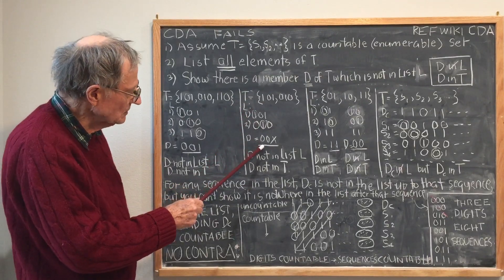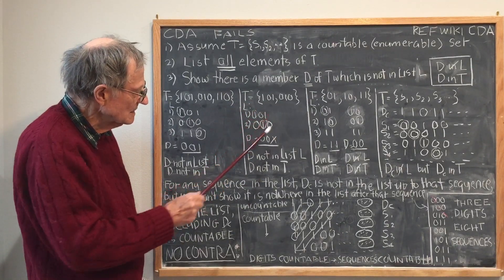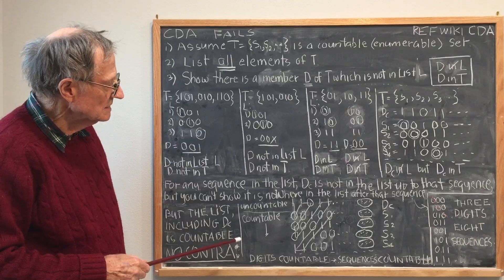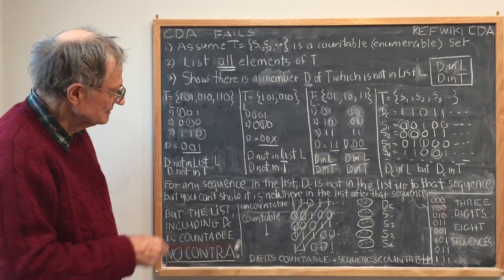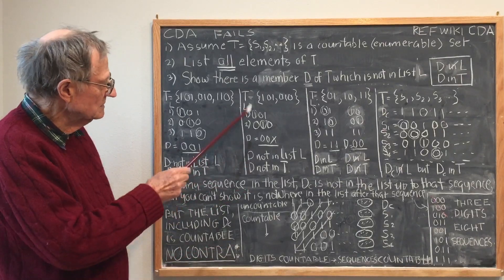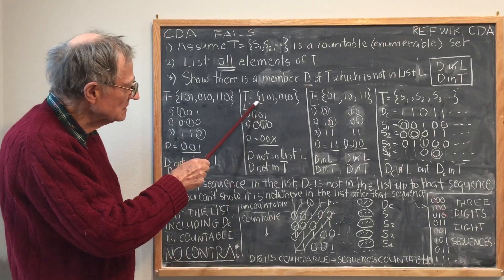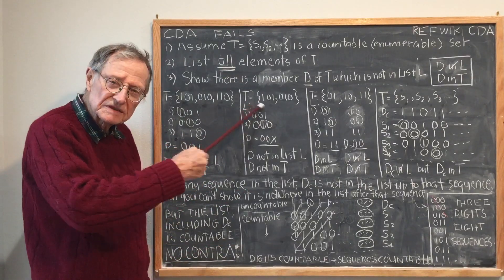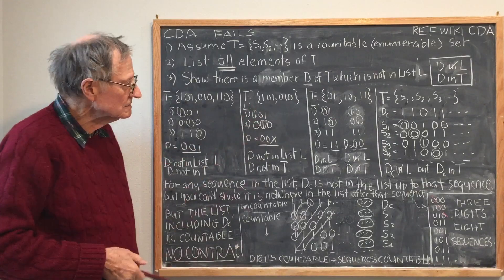As you can look, D is not in T. So this set is countable.